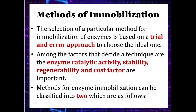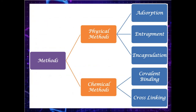The selection of a particular method for immobilization of enzyme is based on a trial and error approach to choose the ideal one. Among the factors that decide a technique are enzyme catalytic activity, stability, regenerability, and cost. The methods for enzyme immobilization can be classified into two: physical methods and chemical methods. Under physical methods come adsorption, entrapment, and encapsulation. Under chemical methods come covalent binding and cross-linking.